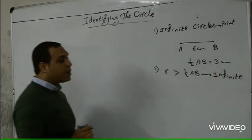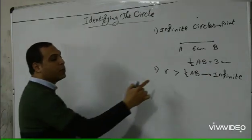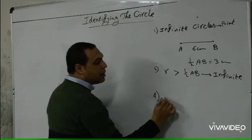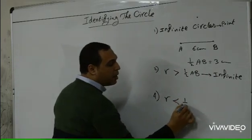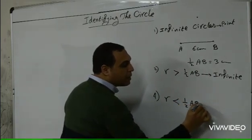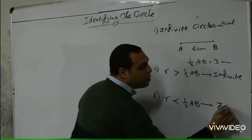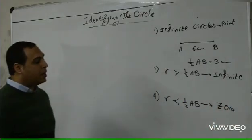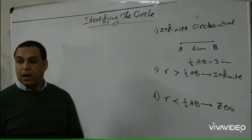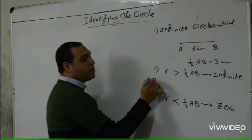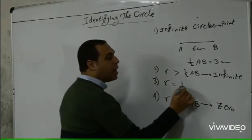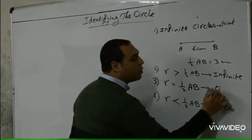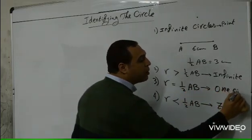How many circles can be drawn passing through A and B if the radius is less than half AB? Zero — no circles can be drawn. But if the radius equals exactly half AB, then we can draw exactly one circle.